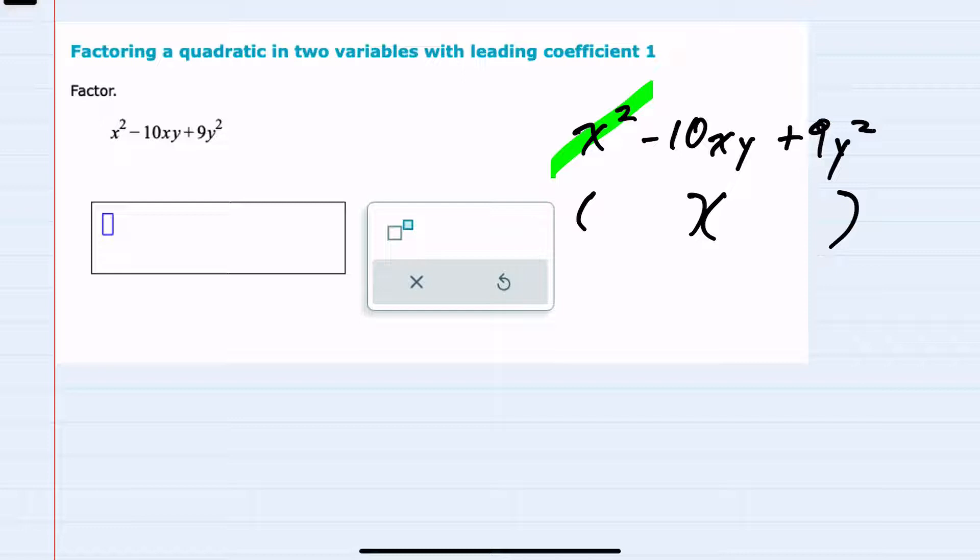My factors of x squared only gives me one possibility. This has to be x and x to multiply to get x squared.